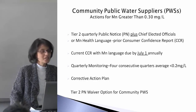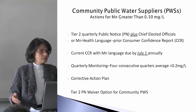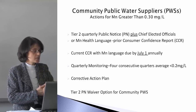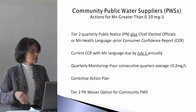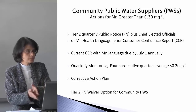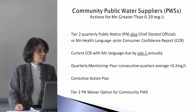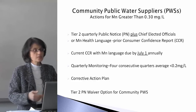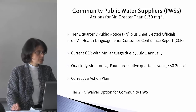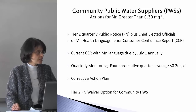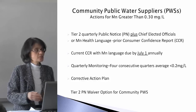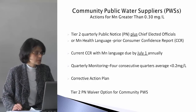For community public water supplies: if you've confirmed the average is over 0.3, you notify the regional office and you'll get a letter saying to do a Tier 2 quarterly public notice. This is consistent for all drinking water contaminants — the standard public notice process. There's an actual notice you send to your public. There is an exception: if your public water supply has already issued language in your consumer confidence report from the previous year that talks about the health effects of manganese and that you've triggered the health advisory ORSG, then you don't need to do a public notice again.